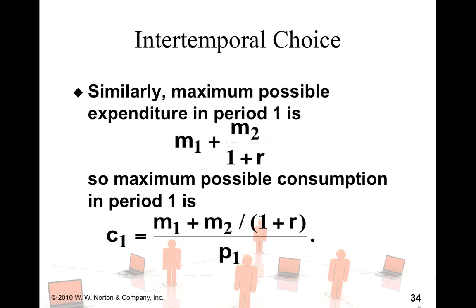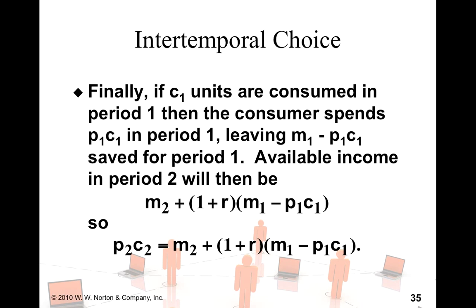If on the other hand, I decide to spend all my income in the first period, then I have to look at the present value of my income. And to find out what consumption I would have in terms of units, I divide that by p1, which is the price of consumption bundle in period 1. So that's your x-axis or the x-intercept.